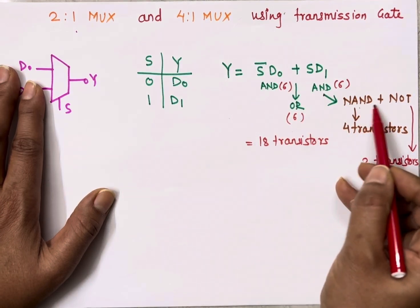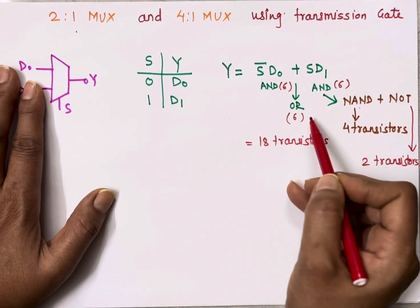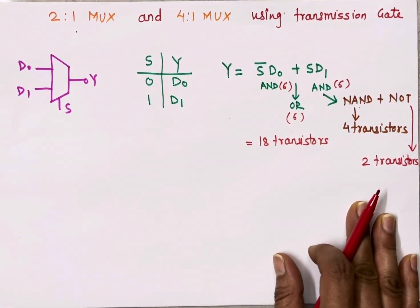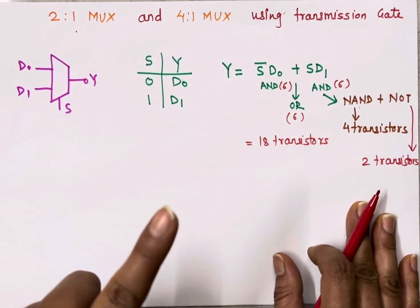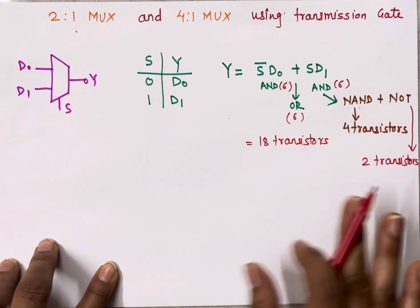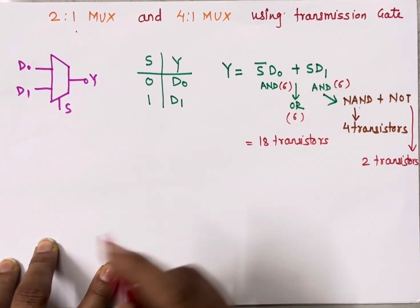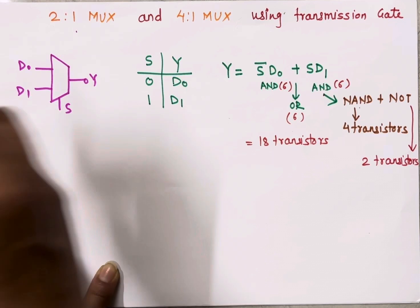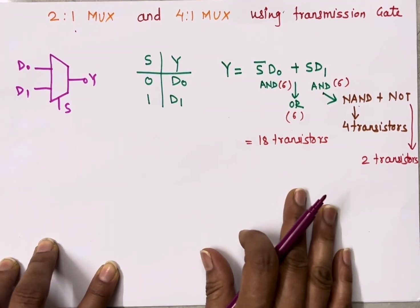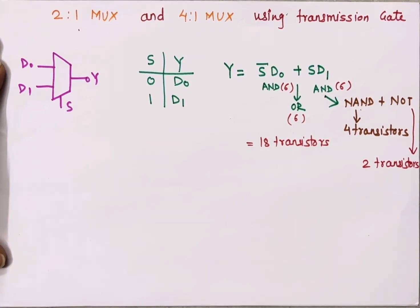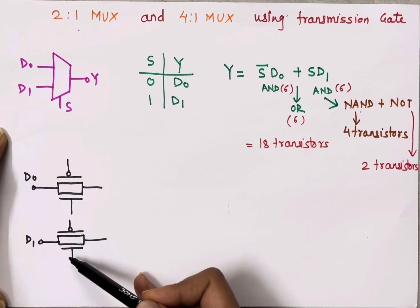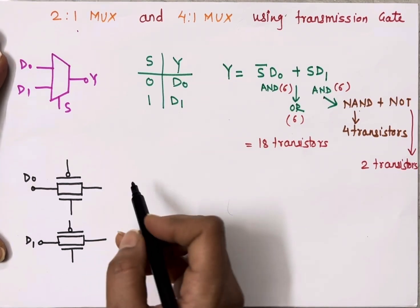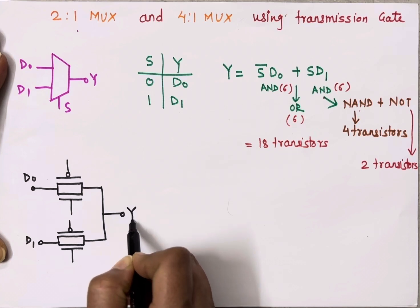For OR, we need NOR plus NOT. So 18 transistors are needed with the traditional approach. Now let's see how using a transmission gate we can implement the same multiplexer using only 4 MOSFETs. Since we have 2 inputs and a transmission gate can pass one signal at a time, we need two transmission gates. I will draw two transmission gates — D0 is connected to one transmission gate and D1 to the other. I will simply connect the outputs of these two transmission gates, and here I will get output Y.